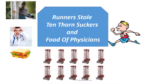So just keep this in mind: the thorn sucker machine that will help you suck the thorn from any plant. And this is going to be the trick that you are using to remember the different types of stem modification — that is: 'runners stole 10 thorn suckers and food of physicians.' You have to remember this phrase. It's pretty simple because you can just imagine some runners stealing these 10 thorn sucker machines and when they are tired of running after stealing the machine, they are going to steal the food of some physicians. Of course, this is an imaginary story, but easier to remember than the list.